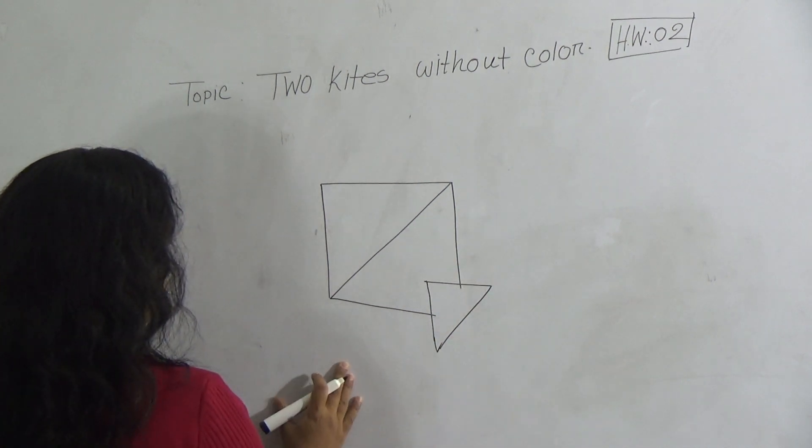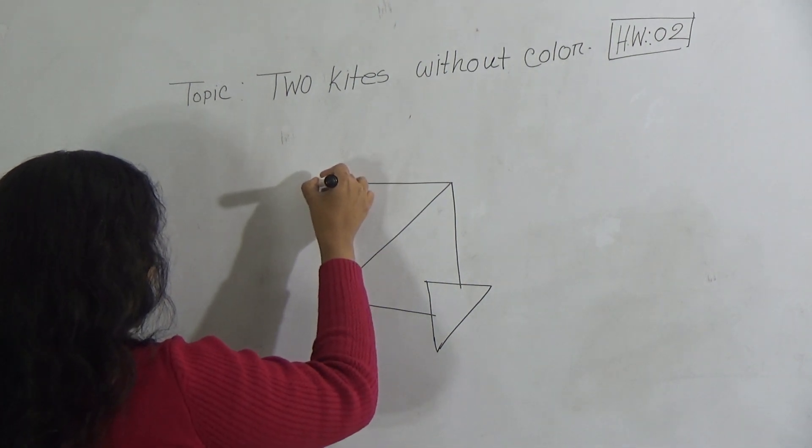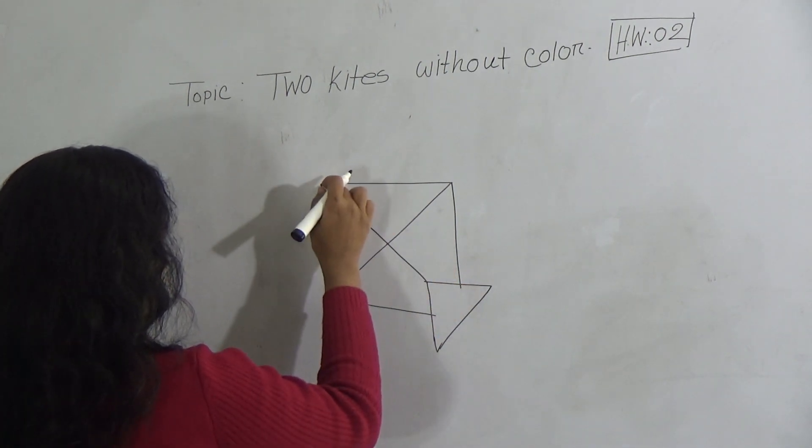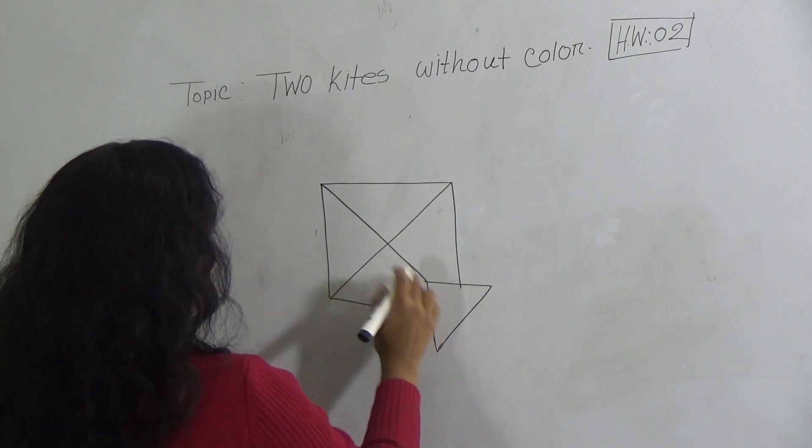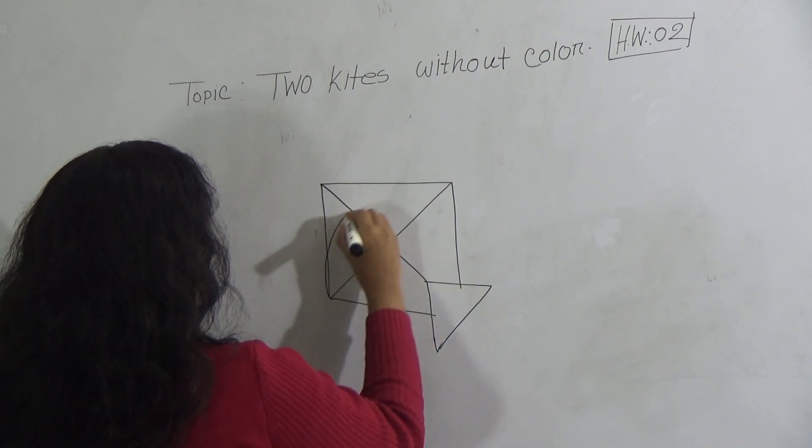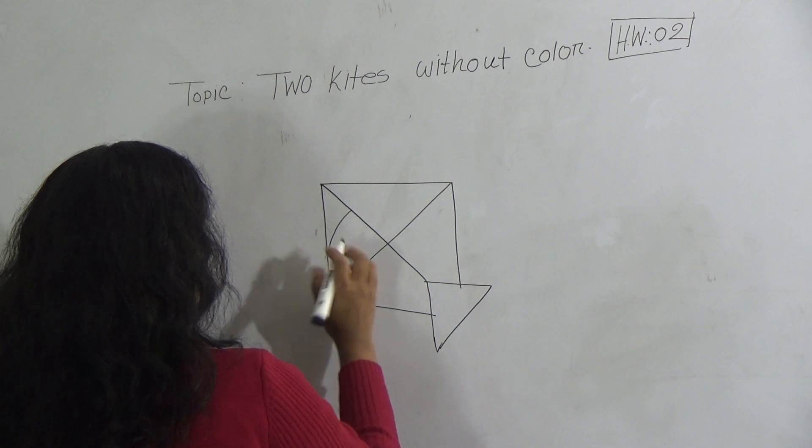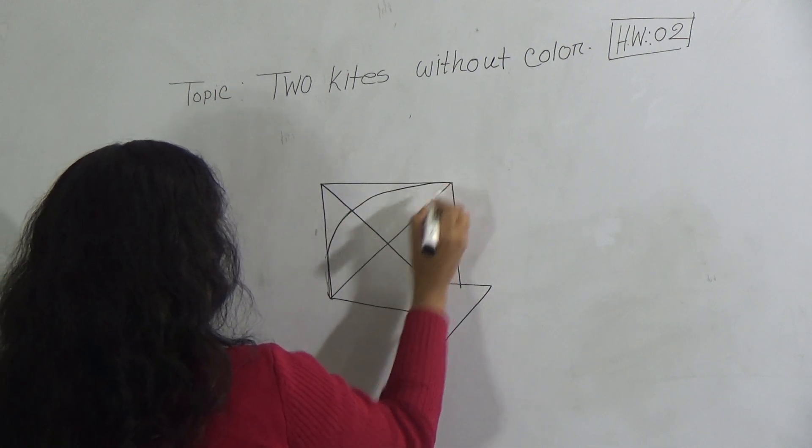And after that you will draw the line from top to bottom, this portion to this portion. And then give a curved line, okay?